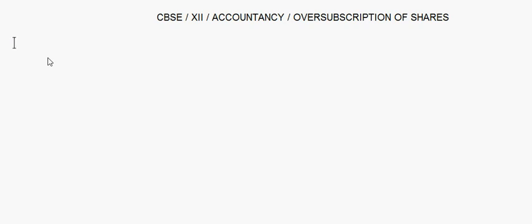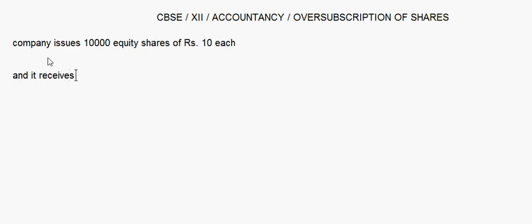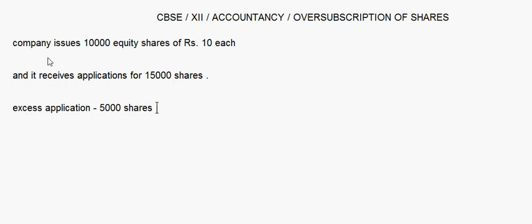Today let's take up oversubscription of shares. Suppose a company issues 10,000 equity shares of rupee 10 each and it receives applications for 15,000 shares. The company can allot only 10,000 shares, so there is an excess application of 5,000 shares.